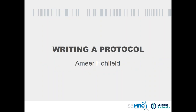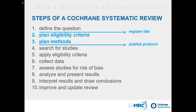Those who joined us last time will remember that Taryn Young went over the steps of a Cochrane Systematic Review, where she discussed defining the question using the PICO framework — your population, intervention, comparators, and outcomes. She also discussed registering the title and motivation for doing a systematic review.